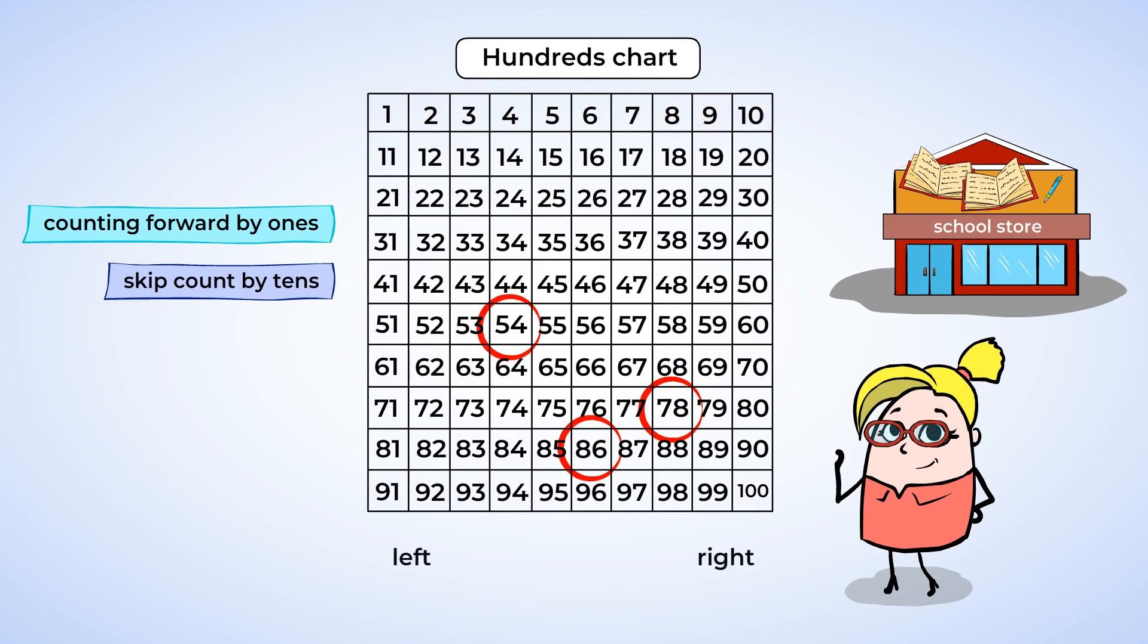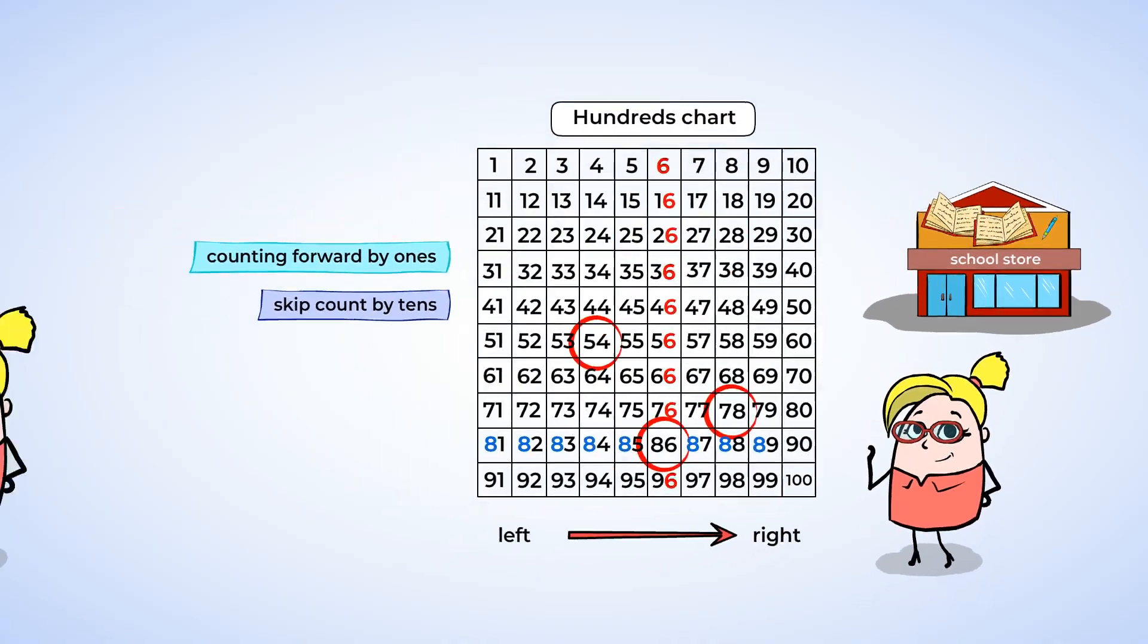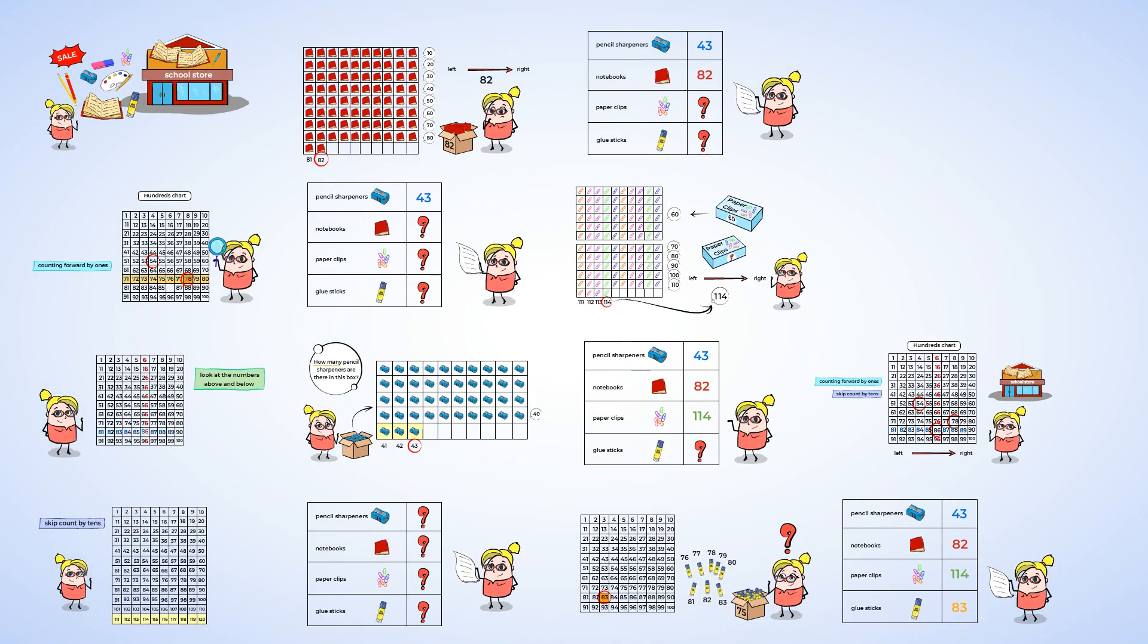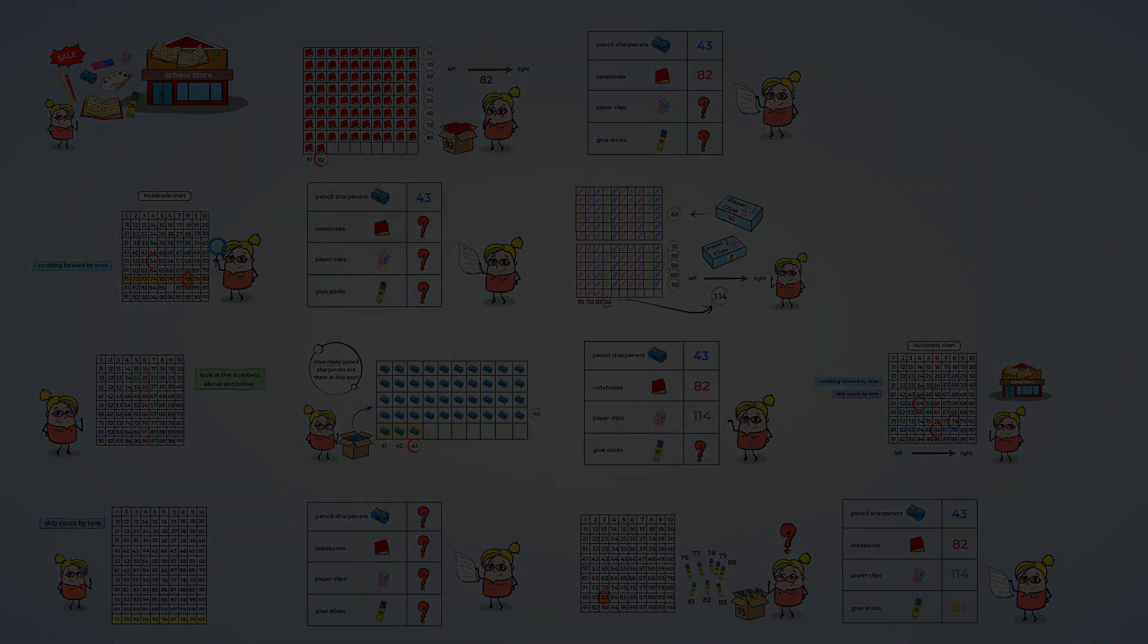Write the number from left to right. And we also learned how to find the missing number on a hundreds chart by counting from a number that is nearby, or looking at the numbers above and below it. And now the school store is ready to start selling its school supplies. Great work today, mighty owls! That's me. Thank you for coming.